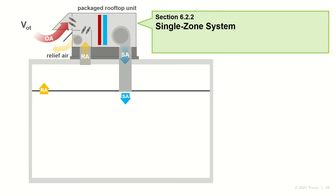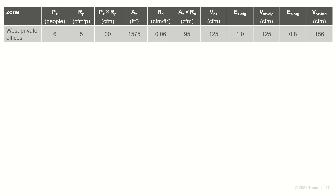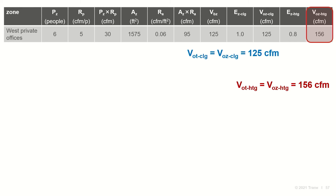Starting with the single zone system, since all outdoor air entering a single intake is delivered to one zone, this calculation is simple. According to Standard 62, the required system intake flow V-sub-OT equals the corresponding zone outdoor air flow V-sub-OZ. For our example, a separate package rooftop unit serves the west private offices zone, so V-sub-OT equals 125 CFM in cooling mode. Because E-sub-Z is less than one in heating mode, the intake flow is higher at 156 CFM.